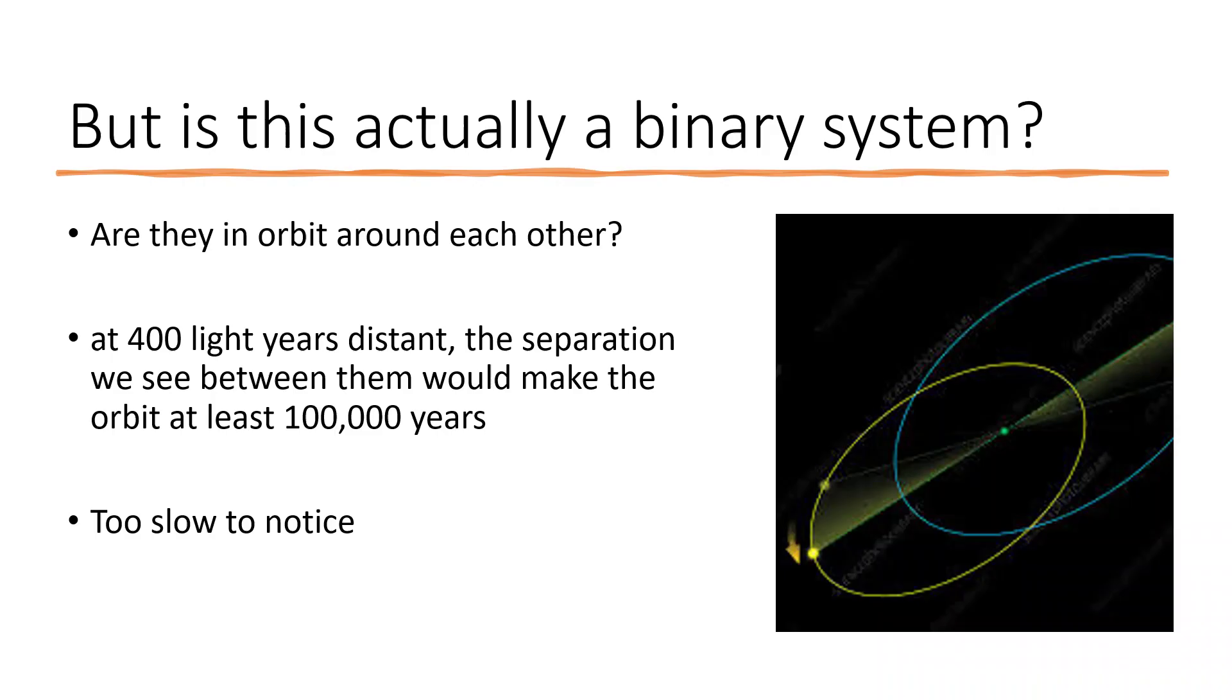But first of all, the question really is, is it a true double star, or are these simply orbiting separately around the galaxy and just happen to be in the correct line of sight? With them being 400 light years away and at the distance that corresponds to in terms of the angular separation, the orbit would be at least 100,000 years in duration, and that's really rather difficult over human timescales to be able to notice.